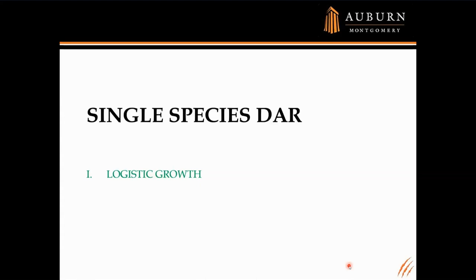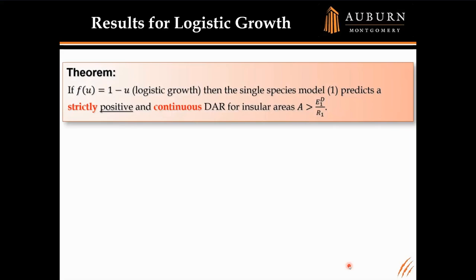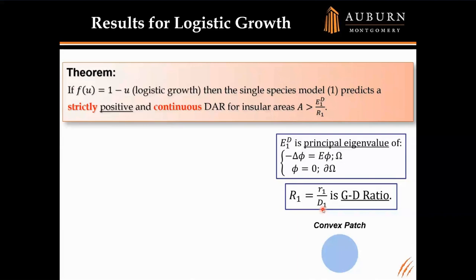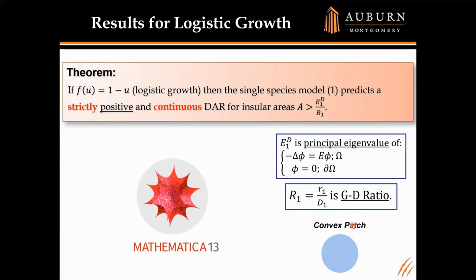For the single species case with logistic growth, we were able to prove that the single species model always predicts a strictly positive and continuous DAR, as long as the area A is bigger than the crucial threshold E1D divided by R1. Now we want to use Mathematica to get hands-on experience and see what this DAR relationship actually looks like. Let's take a convex patch — a disk — and jump over to Mathematica.